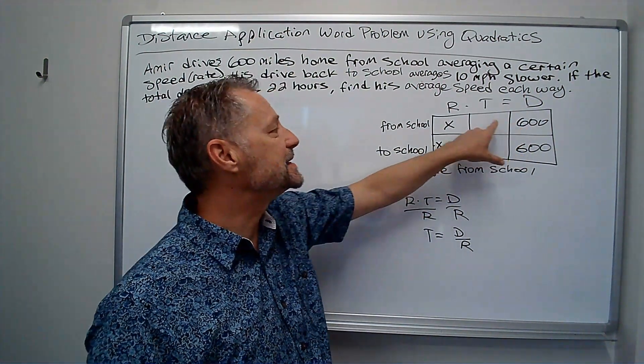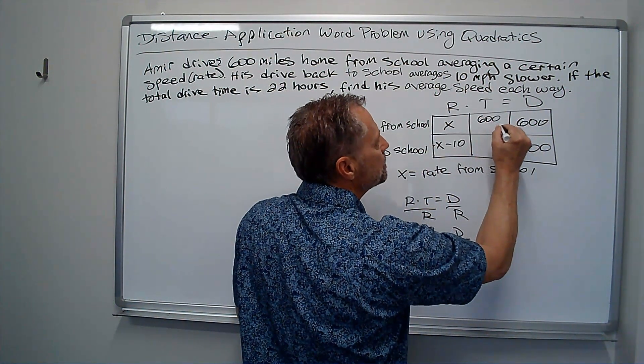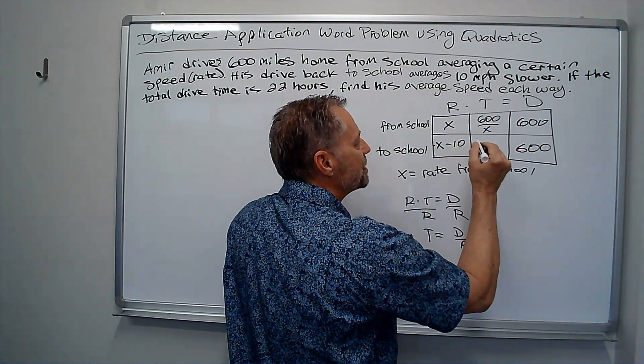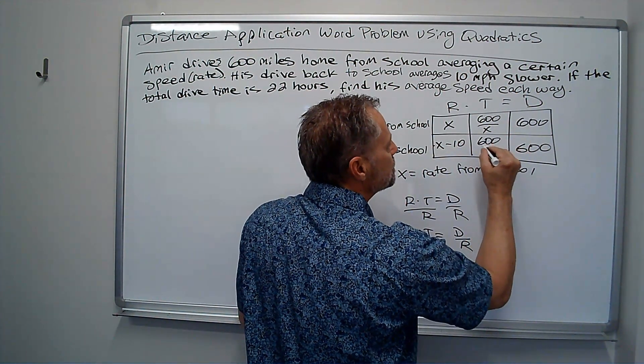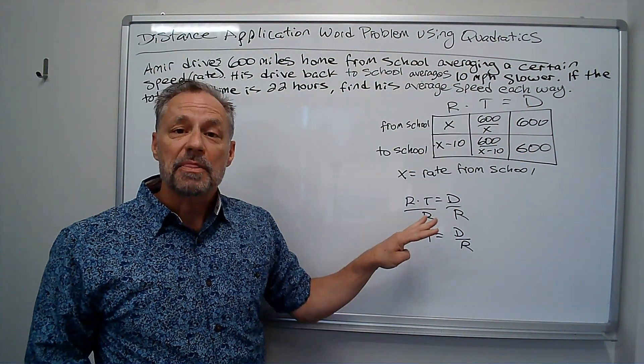And I get time equals distance divided by rate. I can put in distance divided by rate. So, this time is going to be 600 divided by X. This time is going to be distance divided by rate, 600 divided by X minus 10.